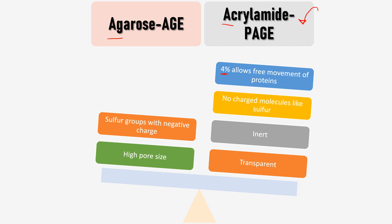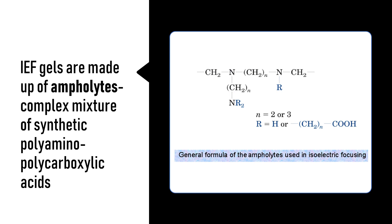Since the separation is based upon the pH of the protein, we need to create a pH gradient on the gel. To create this pH gradient, we use ampholytes, which are basically complex mixtures of synthetic polyamino polycarboxylic acids. These ampholytes help to create a pH gradient on the gel on which you can separate the molecules based upon their pH.